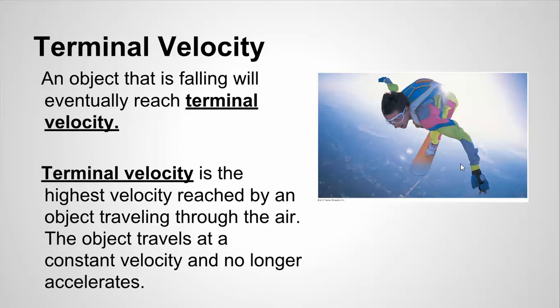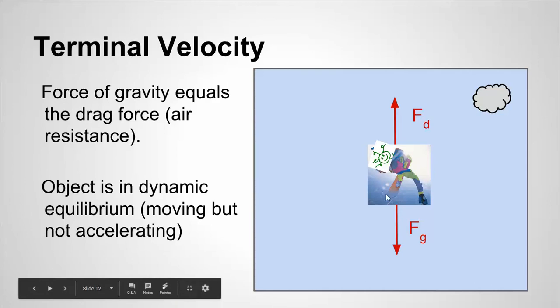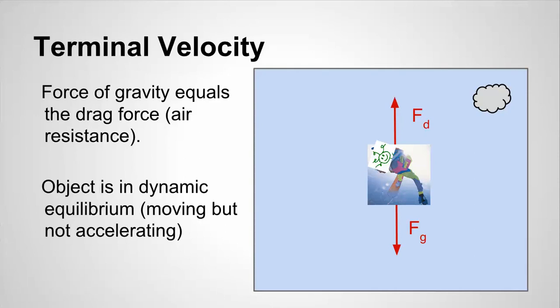A special case of dynamic equilibrium is when an object reaches terminal velocity — that's when a falling object stops speeding up. It's the highest velocity reached by an object traveling through the air, and it will travel at a constant velocity without accelerating. Imagine Fred has jumped from an airplane and is falling. He has the force of gravity pulling him down and air resistance pushing up. When terminal velocity is reached, the force of gravity equals the air resistance, giving him zero acceleration. He is in dynamic equilibrium — he is moving, but this is not static equilibrium.